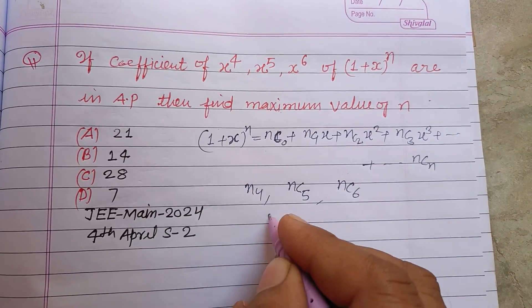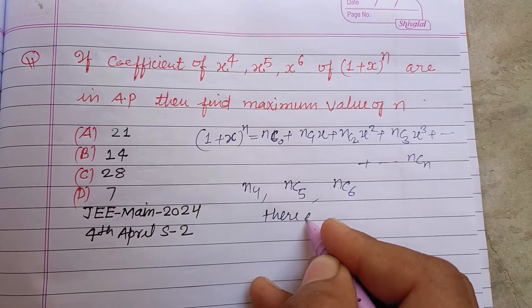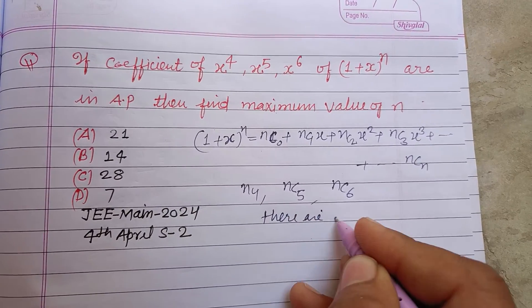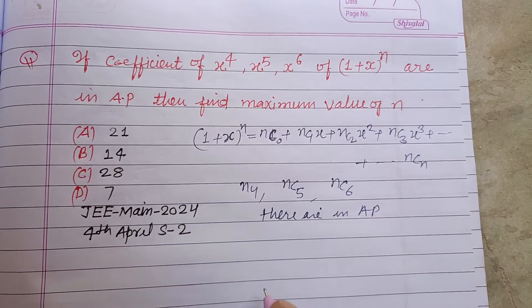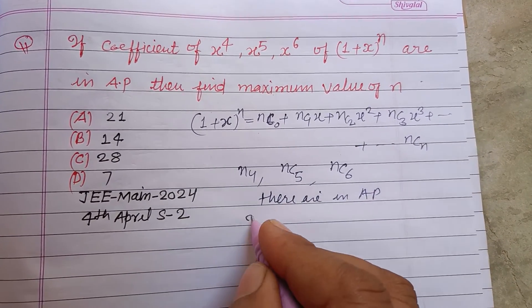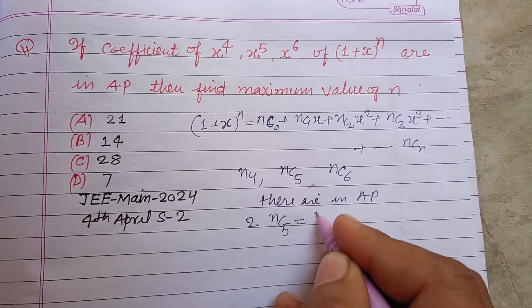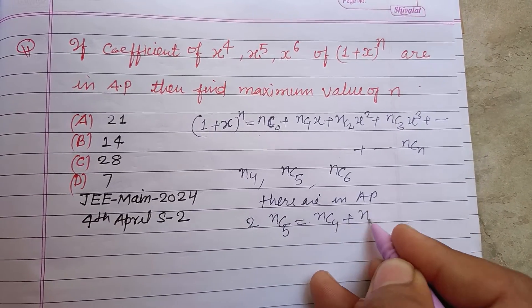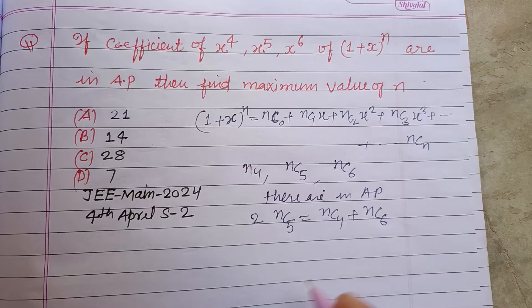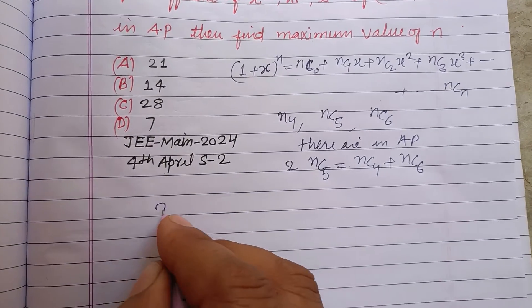And these coefficients are in AP — arithmetic progression. So 2 times nC5 equals nC4 plus nC6. Using this condition we proceed.